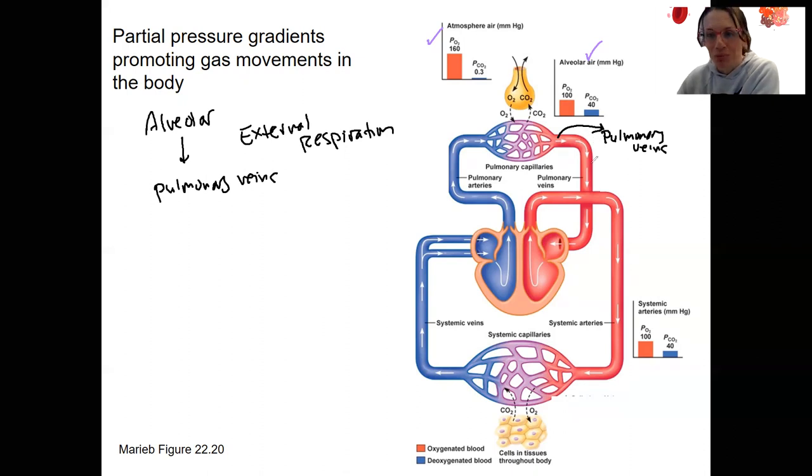So equilibrium is reached, right? So partial pressure of oxygen is still 100. Partial pressure of carbon dioxide is 40. Because of this, right? It's going to be the same. You could graph that. It's going to be maintained, actually, those partial pressures throughout the systemic circuit.